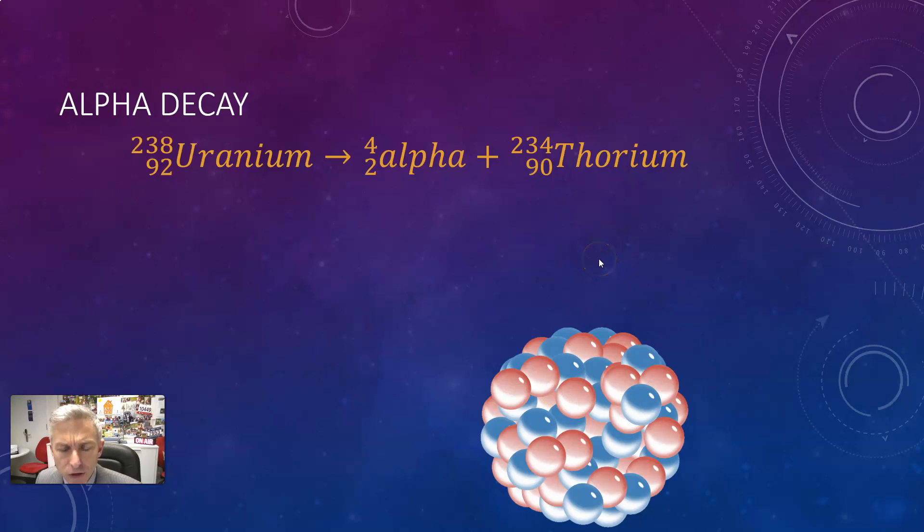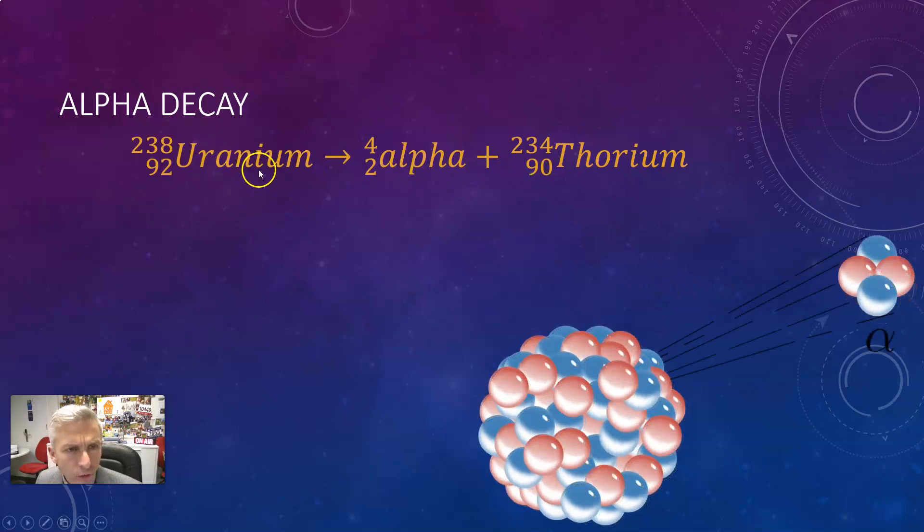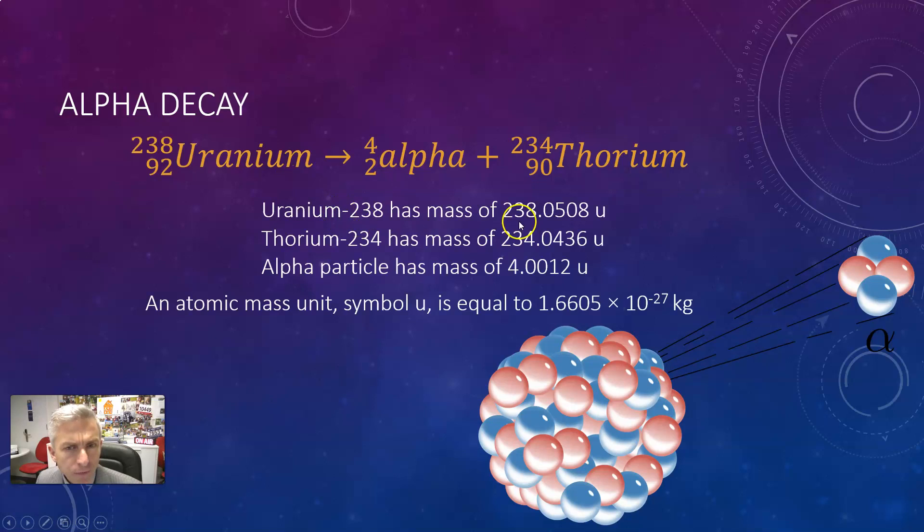In an alpha particle decay, the alpha particle is spat out of the nucleus at high speed. Where does it get that kinetic energy from? Well if we look at the accurate masses of all the bits involved you'll find that there is a mass defect.